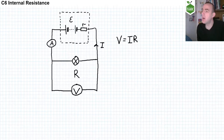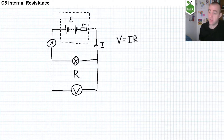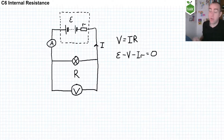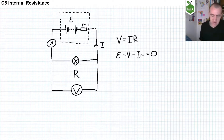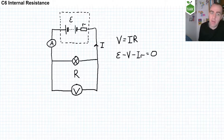Now, the equation V equals IR is still true — the current flowing through the lamp is still equal to the potential difference across the lamp divided by the resistance of the lamp. However, Kirchhoff's second law tells us that the EMF, which is the potential difference across the power supply, is not actually the terminal voltage. That's the voltage across the terminals of the power supply. The EMF, which I've given the symbol epsilon, is not the same thing as V.